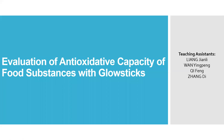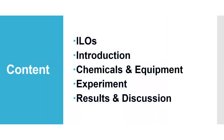Hello everyone. Today our experiment is the evaluation of antioxidant capacity of food substances with glow sticks. It contains five aspects: intended learning outcomes, introduction, chemicals, equipment, experiments, results, and discussions.